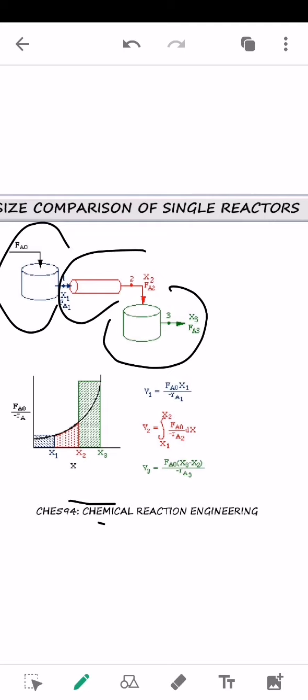So untuk dapatkan volume first reactor ini adalah formula dia based on ini kalau in terms of conversion lah tapi ada kalau guna teori yang lain design equation dia which is FA. So ni kalau first volume.